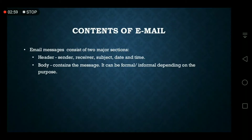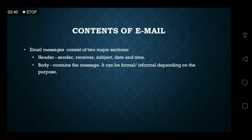Informal emails are sent to friends, relatives, or any close acquaintances. Email messages consist of two major sections: one is the header and another is the body. The header contains the sender's email ID, the receiver's email ID, the subject, and date and time. The body contains the whole message, and it can be formal or informal depending on the purpose.